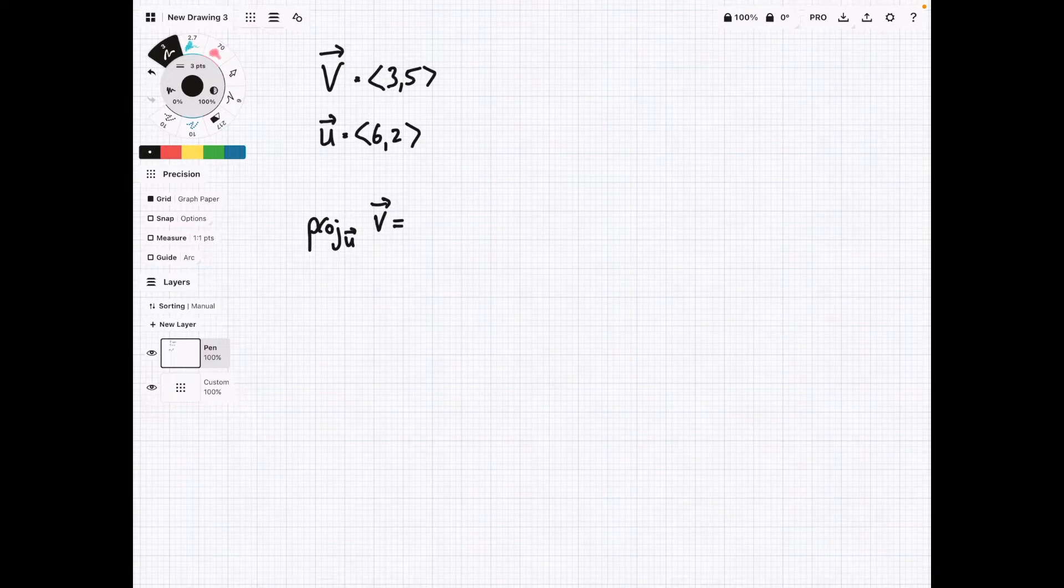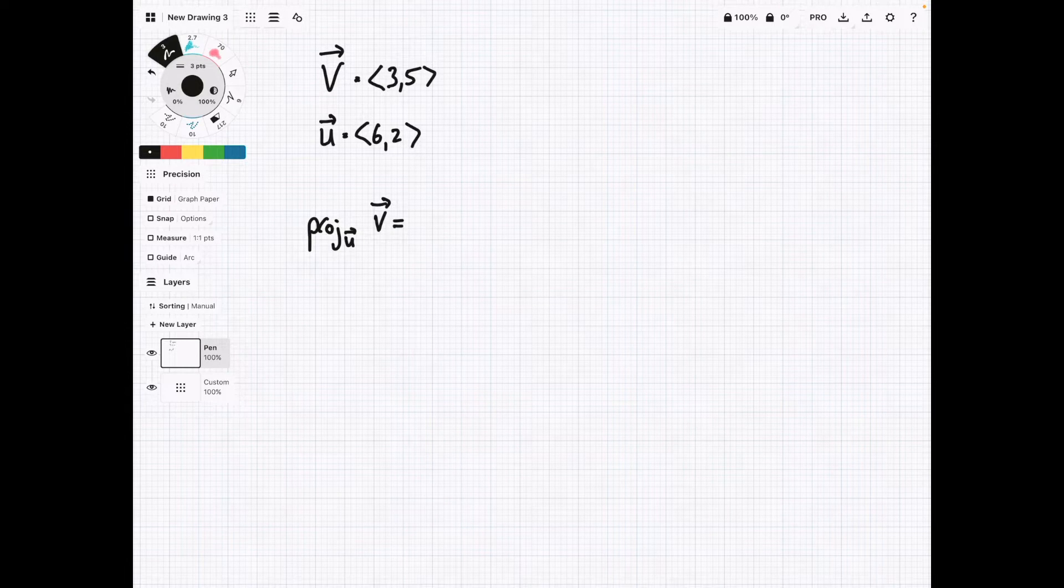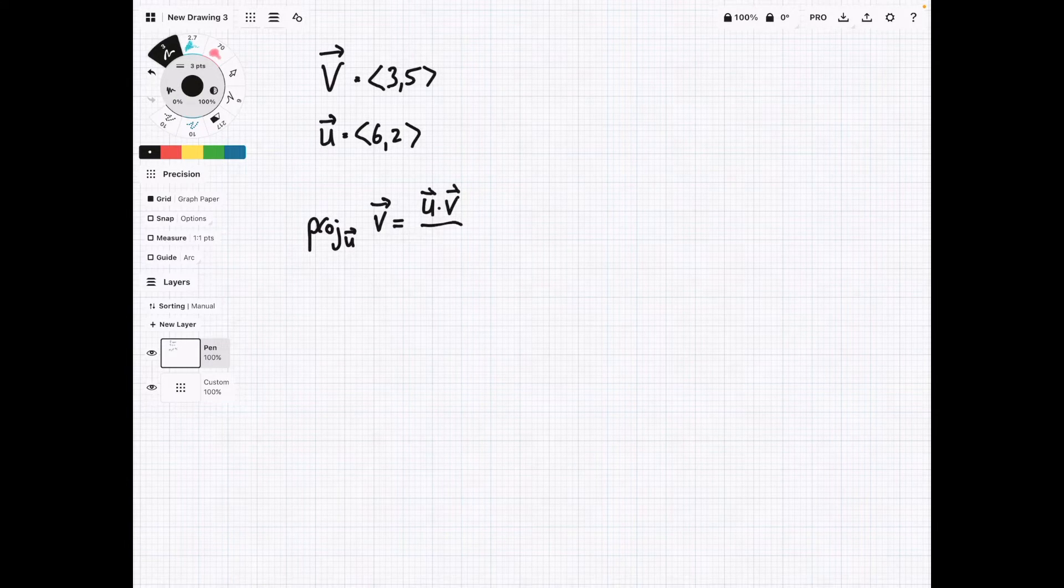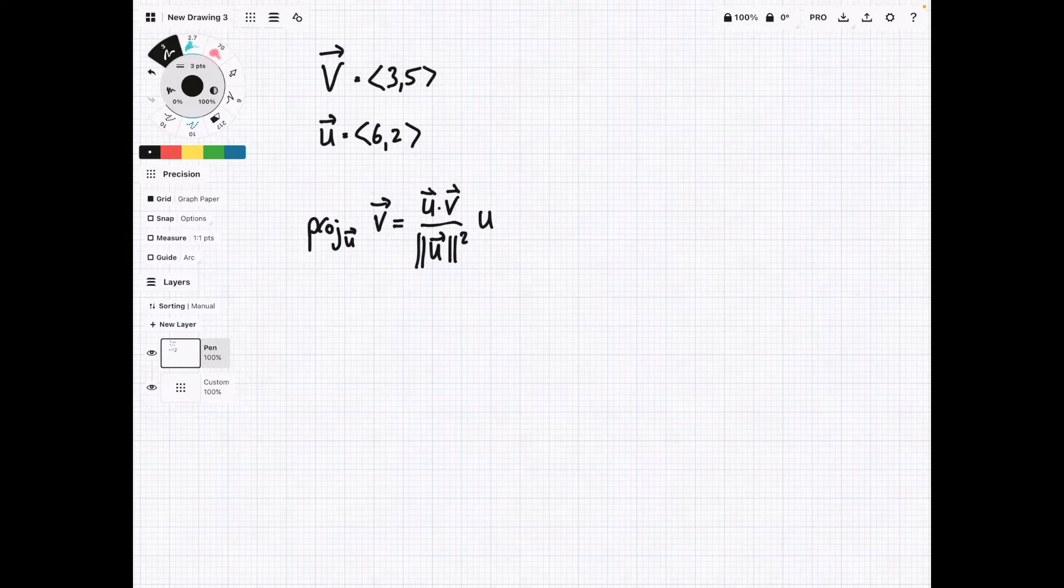For this next problem, we have vector v, which is 3, 5, and vector u, which is 6, 2. What we want to find is the projection of v onto u. So this formula here is a little bit reversed, so before we were doing u onto v, now we're doing v onto u. So when we write out this formula, it's still going to be u dot v on top, that doesn't change. But on the bottom, we're going to have magnitude of u squared, and then we're going to multiply everything by u at the end.